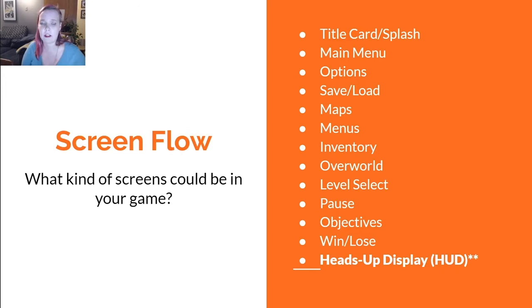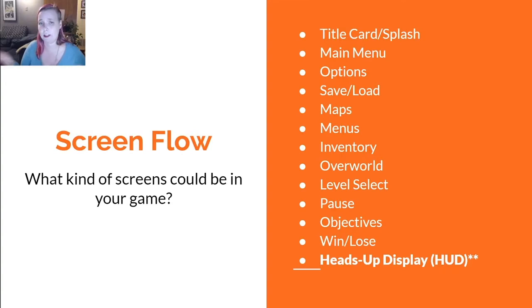Other screen types include overworld design, level select, pause, objectives, and winning and losing — what happens when you complete the objectives and what happens when you fail them. Most importantly, there's the in-game screen and what's sometimes called the heads-up display, or the HUD. In most genres, this is going to be the main gameplay screen shown for the majority of playtime, and it contains all the information the player needs immediately visible to be successful.